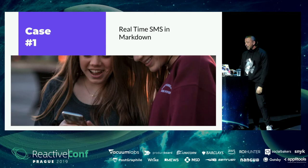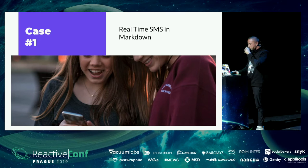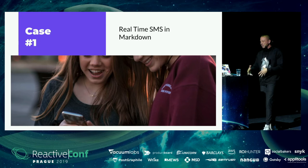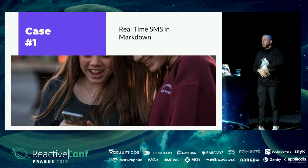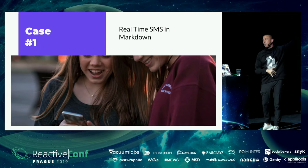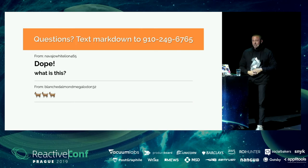Next let's move on to the demos. The first is real-time SMS and Markdown — the curious cases of GraphQL. What if you could SMS text message Markdown and do something with it? I created an app for that, and it's especially good for this conference: you can text message comments about this talk to me, and by the end I'll go back and reference them. You can text the number plus 1-910-249-6765.